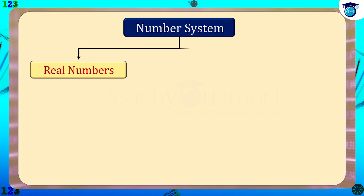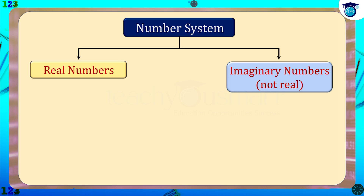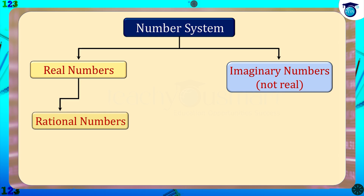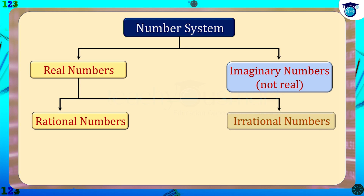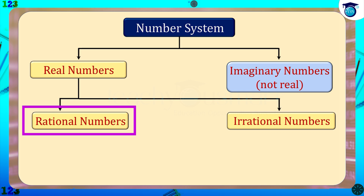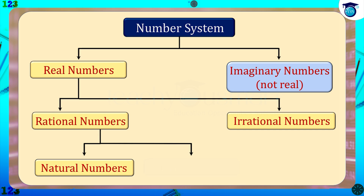Numbers that are not real are known as imaginary numbers, which we will learn in higher classes. Now let us have a brief look into real numbers. If we examine closely, real numbers based on their character and property can be seen as either rational — having a definite logical character — or irrational, having no definite logical character. Therefore real numbers can be divided into rational numbers and irrational numbers, and rational numbers can be further divided into natural numbers, whole numbers, and integers.